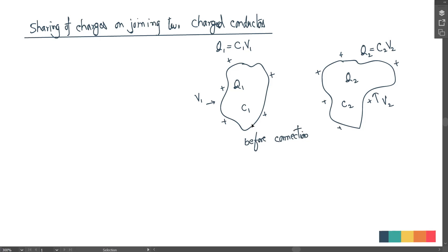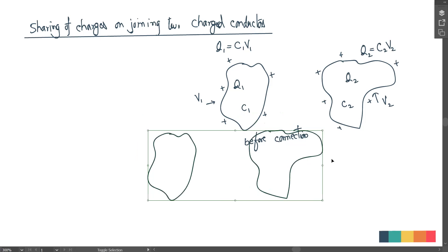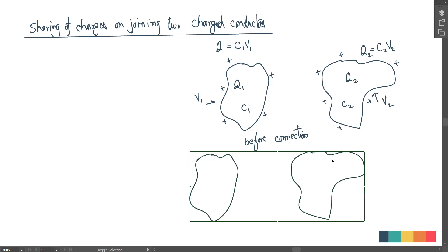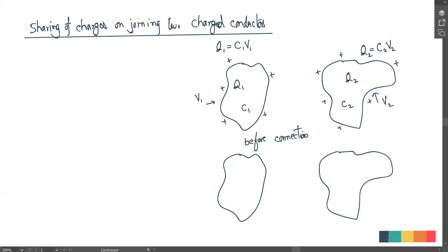Now what do we do next? You connect these two conductors. If there is a potential difference, then charge will definitely flow. It depends on which is at high potential and which is at low potential, but eventually charge flow will happen — and it entirely depends on the potential difference.